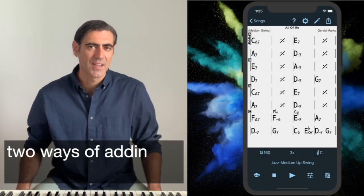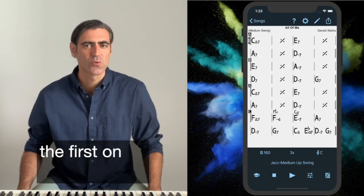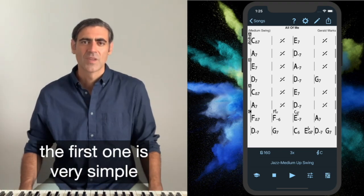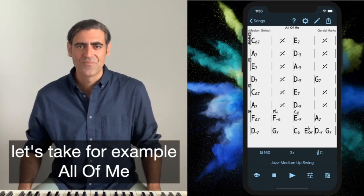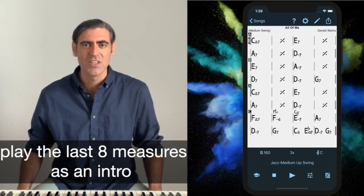With iReal Pro, there are two ways of adding an intro to a song. The first one is very simple. Let's take for example All of Me and let's say we want to play the last eight measures as an intro.